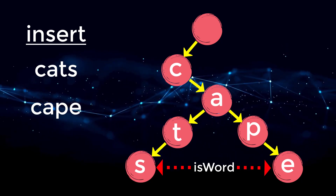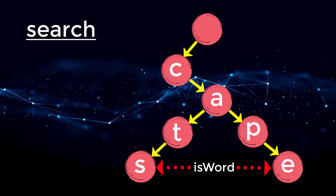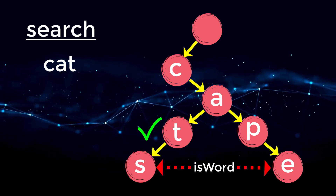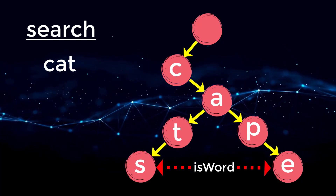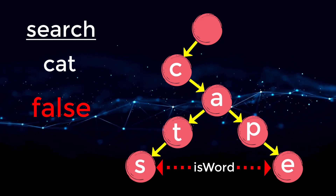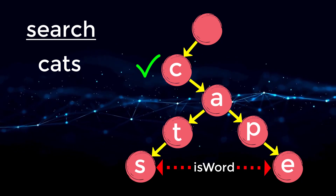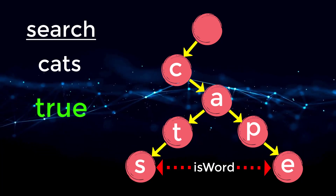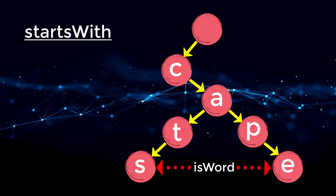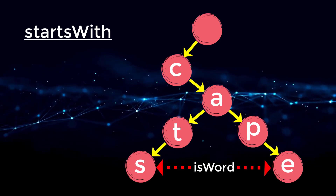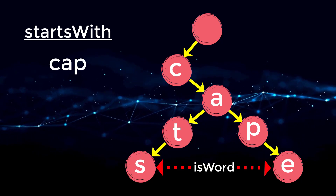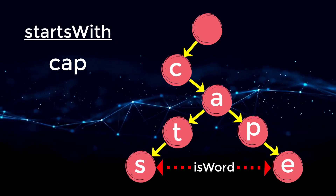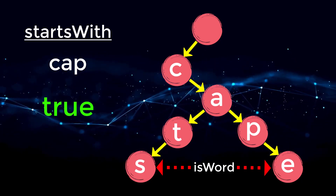Marking word-end nodes is very important for implementing our search function. For example, if we search for the word 'cat', we find C, A, T — but node T is not marked as a word, so we return false. If we search for 'cats', we go C-A-T-S, and since S is marked as a word, we return true. The starts with logic is slightly different — to check if any word starts with 'cap', we go C to A to P. Since all nodes in that path were created, we return true.